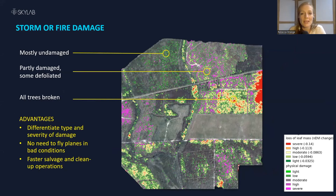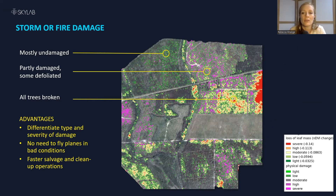A final, no less important application is the assessment and quantification of damage following fires or storms. In this case, it was a hurricane in Louisiana, and we can even differentiate between different types of damage — areas where trees have been completely uprooted and areas where they've simply been defoliated.